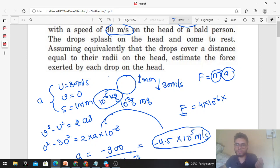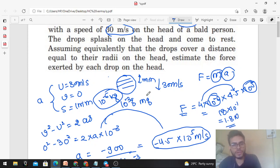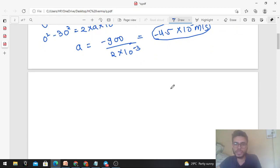Acceleration is negative because it is opposite to the direction of motion. The force which the raindrop will exert on the head of the person will be the same as the force exerted by the head on the raindrop, equal and opposite by Newton's third law. It's 4.5 × 10⁵, and you can calculate: 18 × 10⁻⁶ becomes 10⁻¹, so 1.8 newton is the answer.